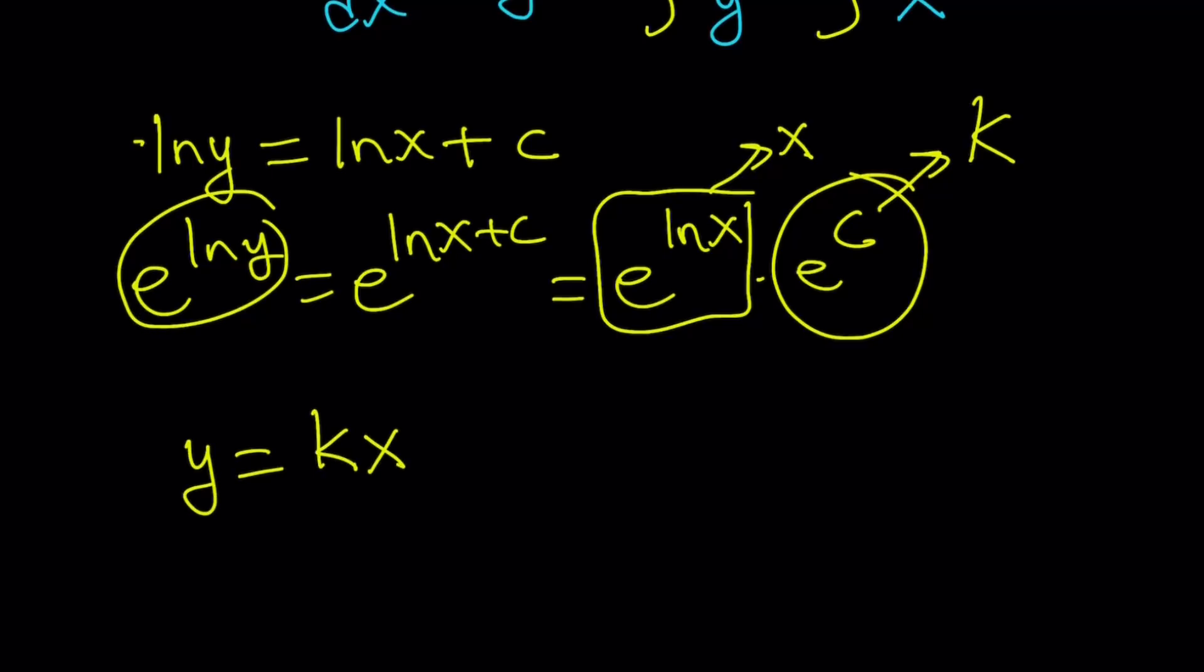So we get y equals kx, which is super duper nice, right? From something, from this, we get something as simple as this one. So this is basically the solution to the homogeneous equation. If you want, you can call this y sub h, like I said before.